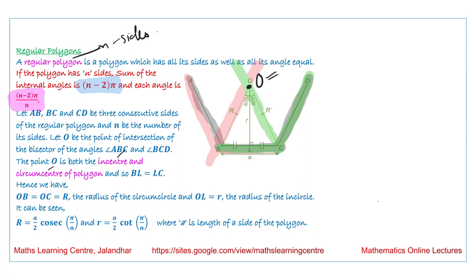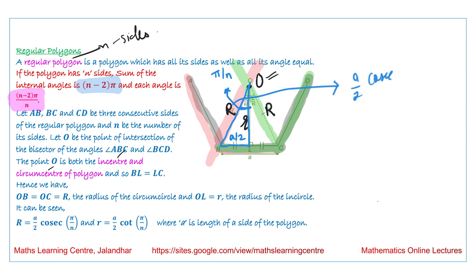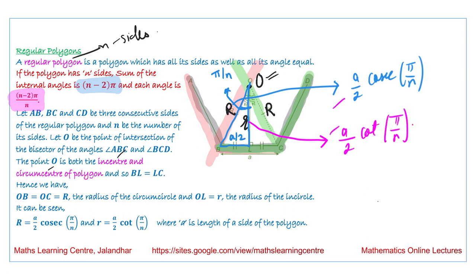We have to calculate the radius of the circumcircle and the inner circle. In triangle OBL, the length BL is a/2 and the angle at O is π/n. From this we obtain that the circumradius R equals (a/2)cosec(π/n) and the inradius r equals (a/2)cot(π/n). These are the radii of the circumcircle and inner circle of a regular polygon.